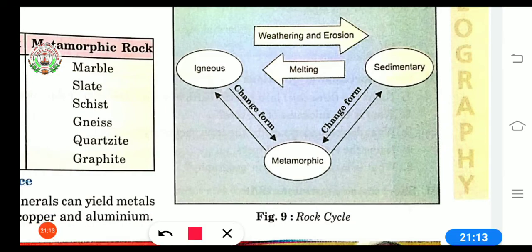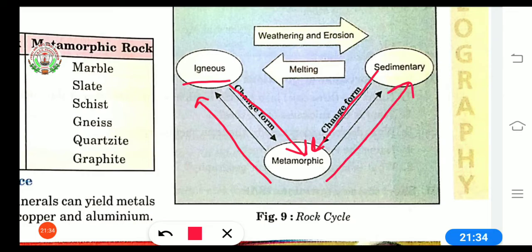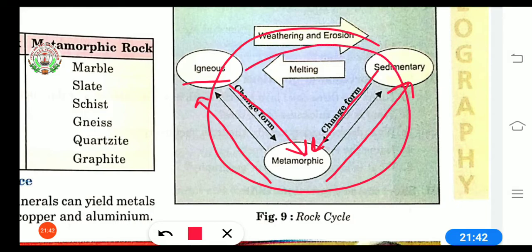In the cycle we are having igneous rock that is changing its form and becoming metamorphic rock. Metamorphic rock that is changing and becoming igneous rocks. Same here with sedimentary rock that is changing and becoming metamorphic rock, and metamorphic rock that is changing its form and converting into sedimentary rock. So likewise this whole process is going on. This is called cycle.